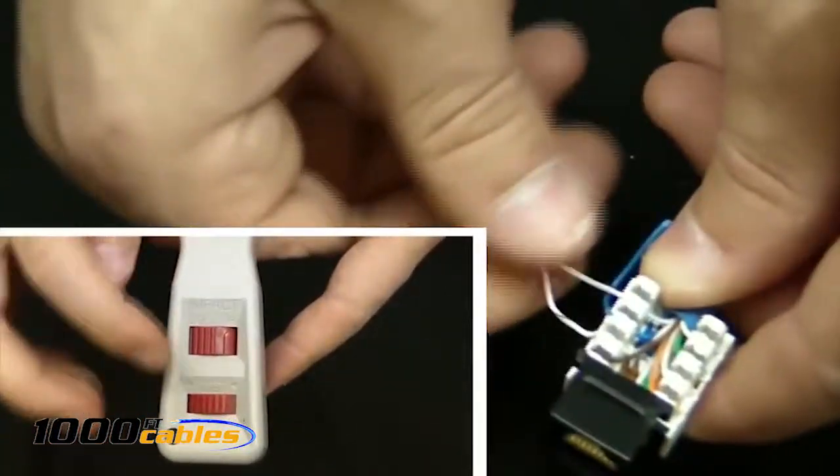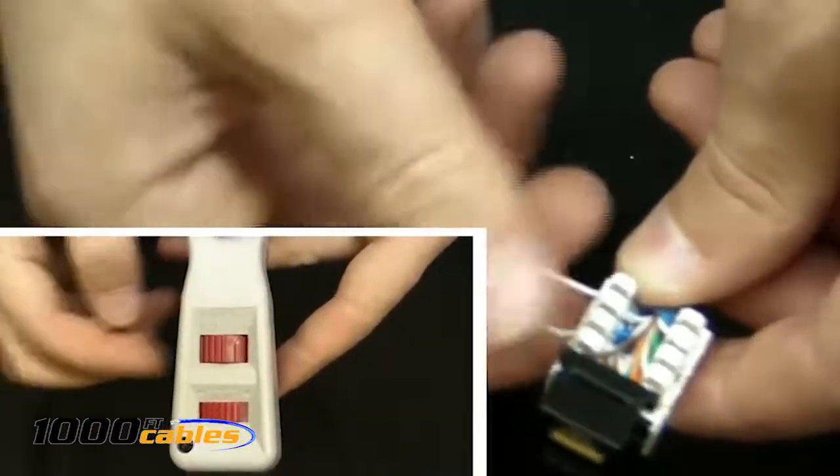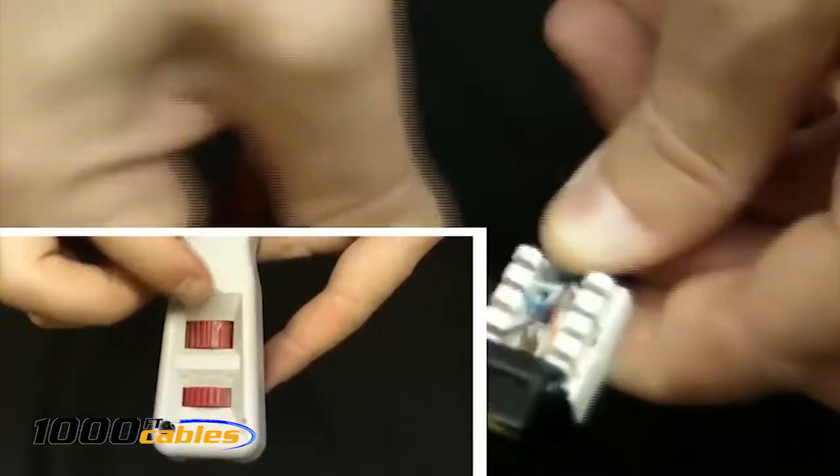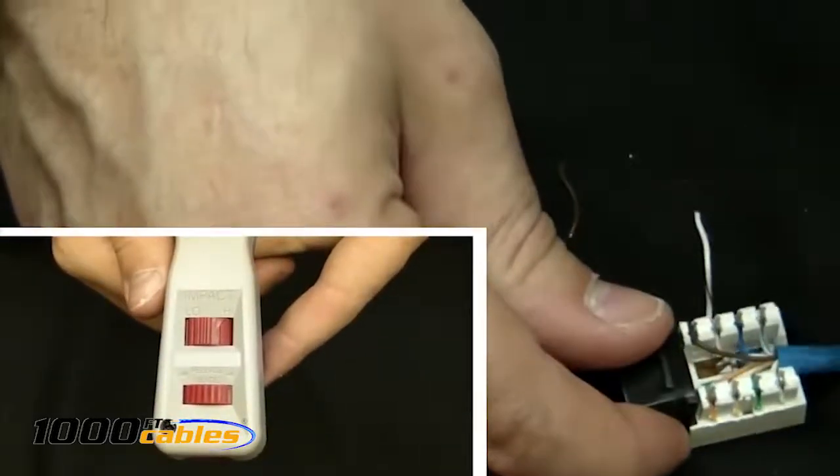One last thing I'd like to mention on your punch down tool here, you'll see you have the low impact and the high impact. It's a lot easier to have it on the high impact, so that way you don't have to punch it down more than once or twice. Sometimes you've got to give them an extra little punch down because they don't want to come loose.